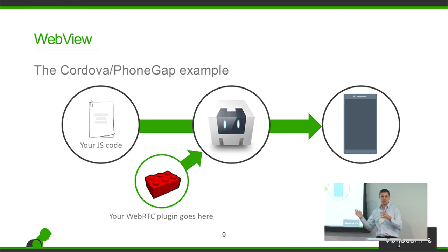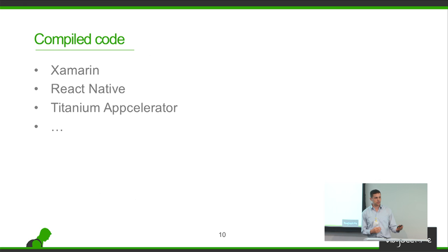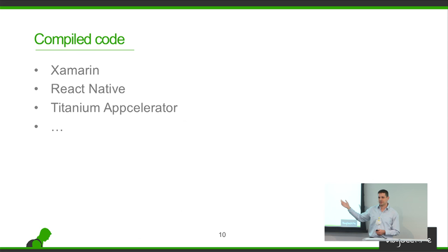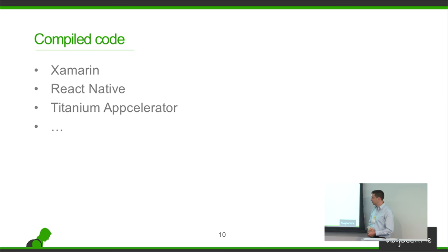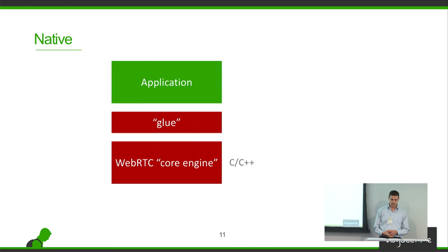The second hybrid type is compiled code — I write something in a scripting language and it gets compiled for the target device. You can use Xamarin with C#, React Native, Titanium, Appcelerator, or other such frameworks — some open source, some commercial. We're going to look at React Native later in one of the talks today.